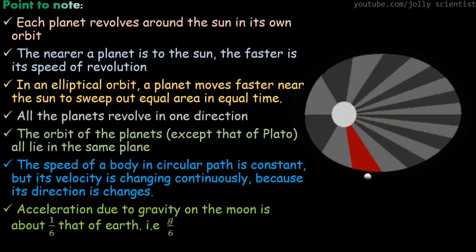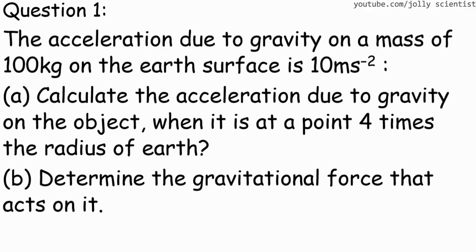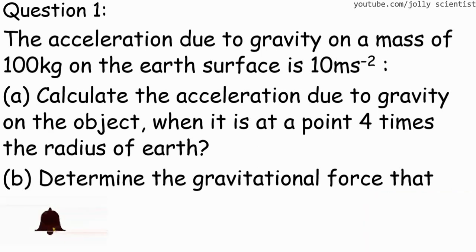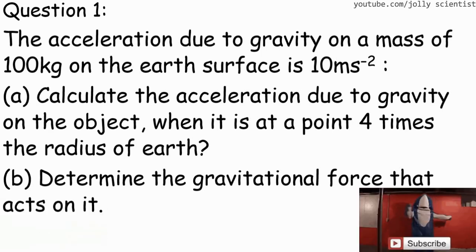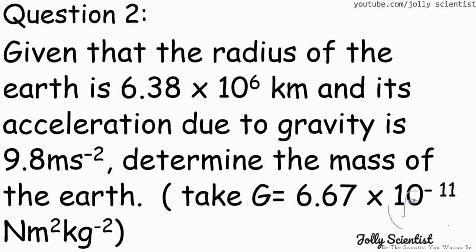The acceleration due to gravity on the moon is about one-sixth that of Earth, which is g on Earth divided by six. Question time: The acceleration due to gravity on Earth's surface is 10 m/s². A) Calculate the acceleration due to gravity on an object when it is at a point four times the radius of the Earth. B) Determine the gravitational force that acts on this body. Question 2: Given that the radius of the Earth is 6.38 times 10⁶ km and its acceleration due to gravity is 9.8 m/s², determine the mass of the Earth.